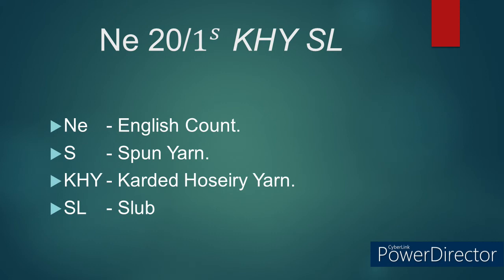Number 5: NE 20/1S KHY SL. Here NE refers to English count. S refers to spun yarn. KHY refers to carded hosiery yarn. SL refers to slub, meaning this carded yarn has slub in it. Normally, the slub yarn is made using the following four parameters: slub diameter, slub length, distance between two slubs, and slub per meter.